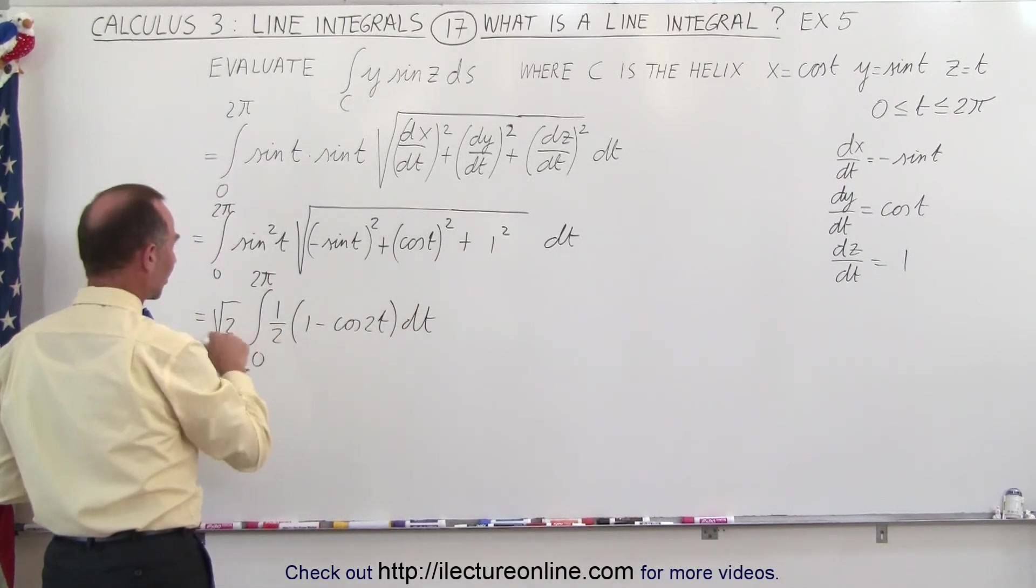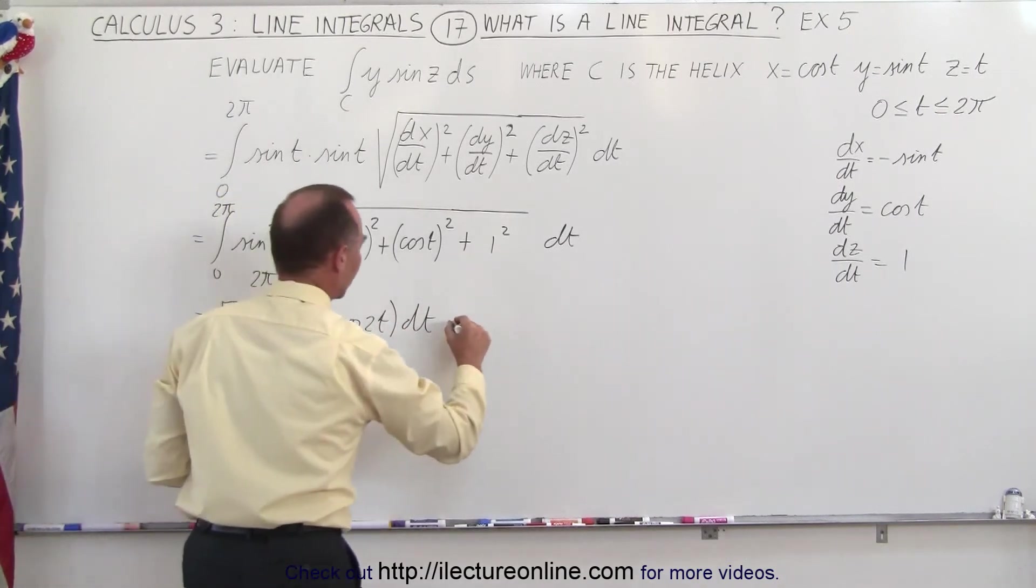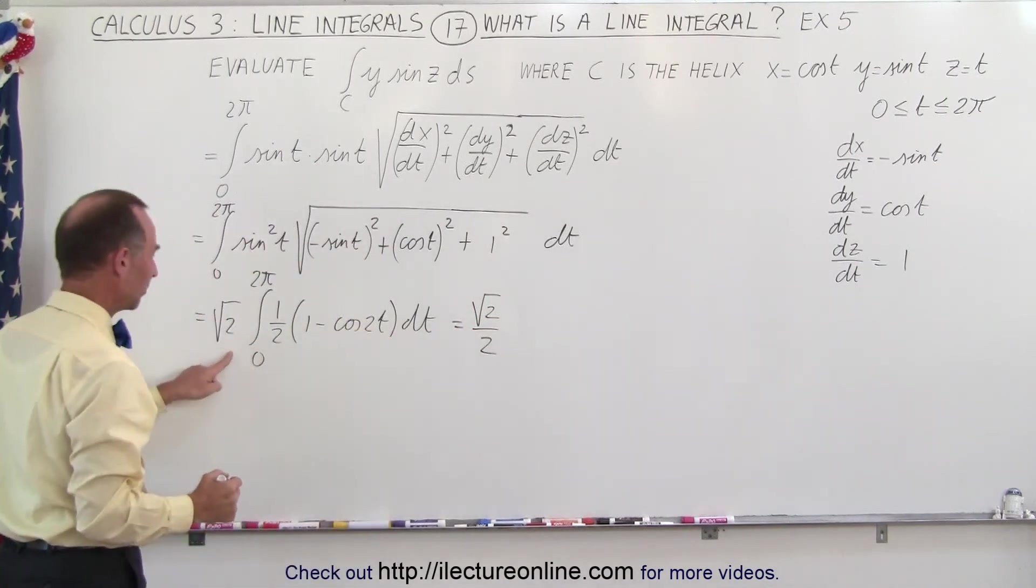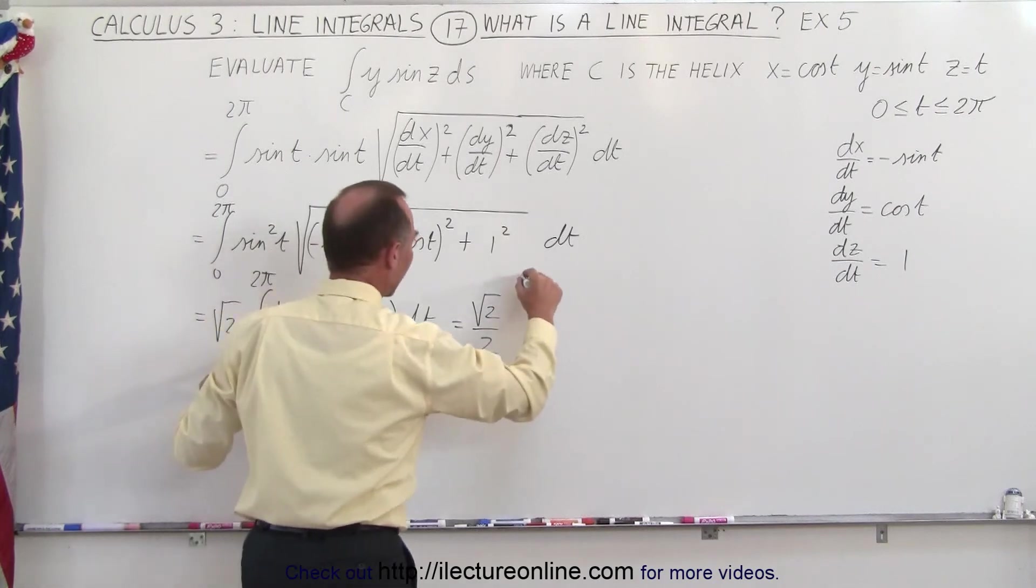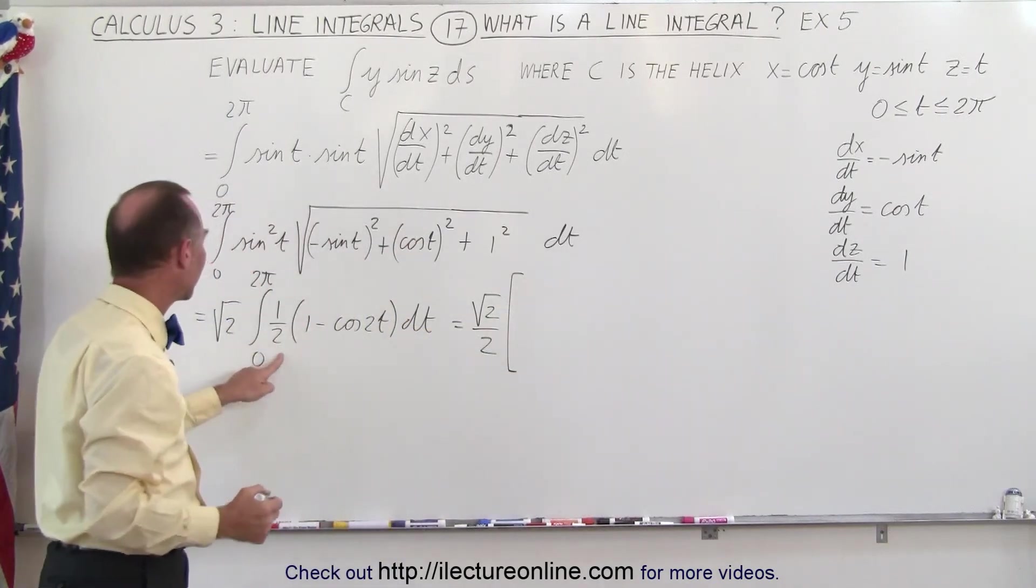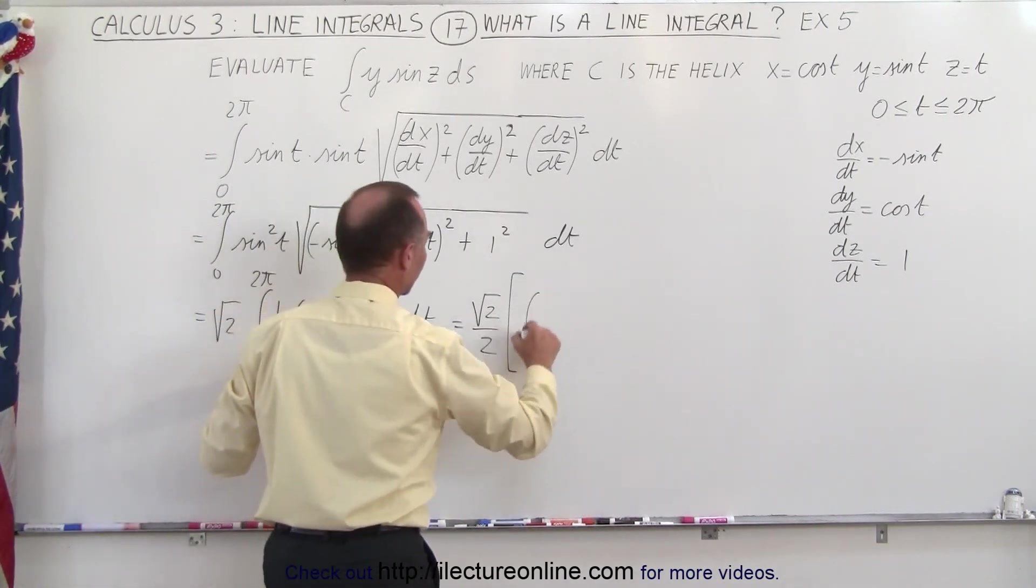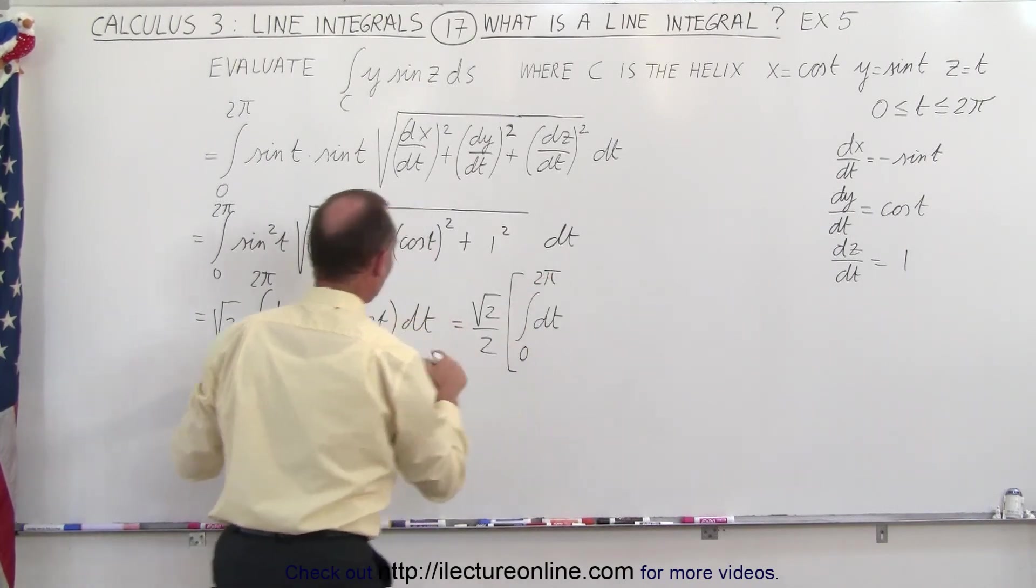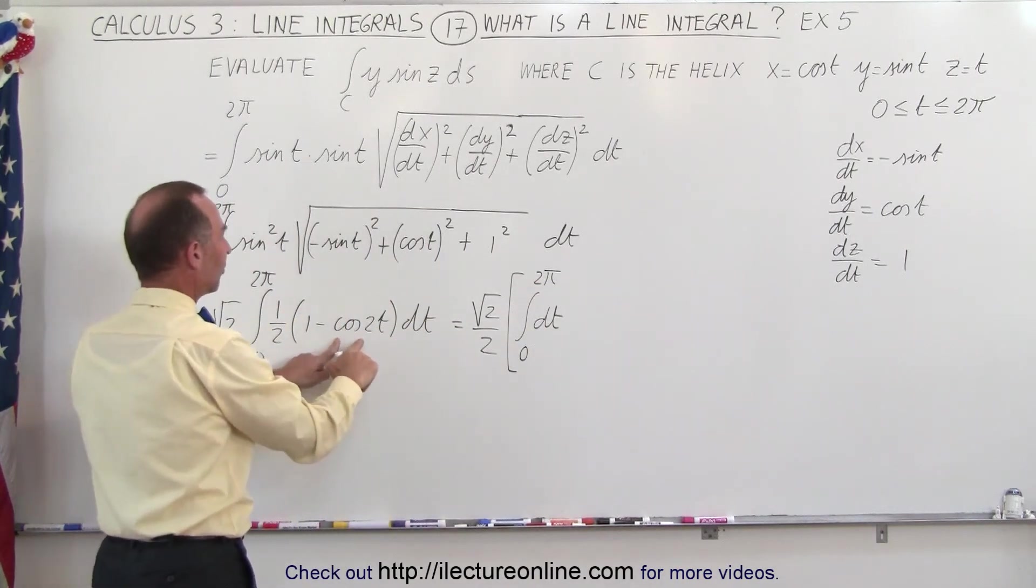Times 1 minus the cosine of 2t times dt, and then the 1/2 can come outside the integral sign, so this is equal to the square root of 2 over 2 times, and it's probably better to write it as two separate integrals. The first integral will be dt from 0 to 2π, because we have dt times 1, and then the second one.